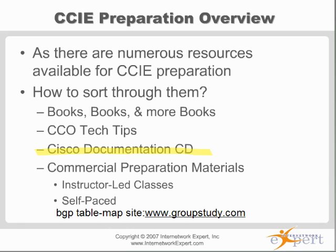How many people redistribute between RIP, OSPF, EIGRP, and BGP in the real world? Not that many. Because it's not a real-world type of problem, it's not a heavy emphasis in the CCA lab. Route redistribution is pretty much a waste of time to master at a 9 or 10 out of 10. A basic understanding of how it works is good enough for the CCA lab. You don't see a lot of discussion about it on the forums.